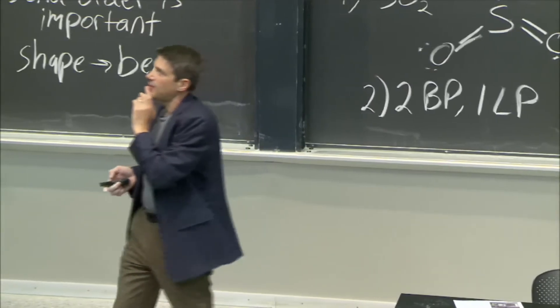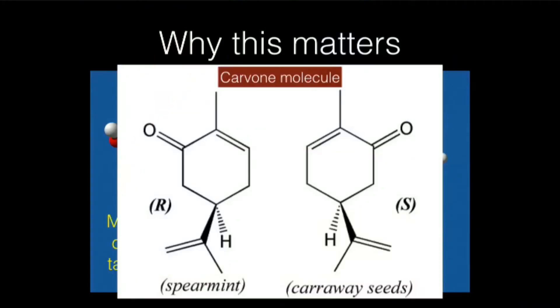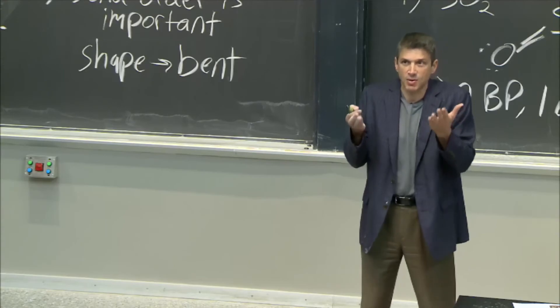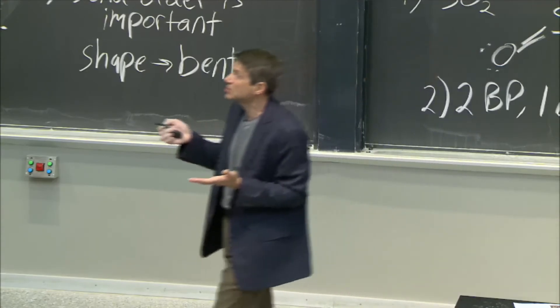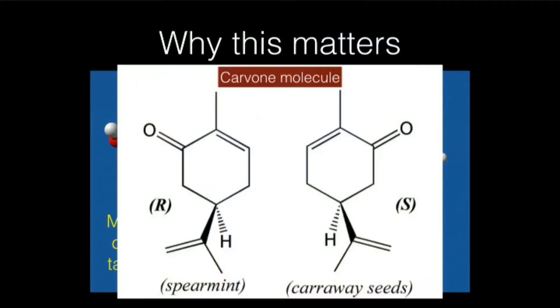But check out this example. This is the same molecule, the carvone molecule, that is called an enantiomer, which means that it has handedness. It's the exact same chemical formula and the exact same structure, except for one is like this and one is like that.